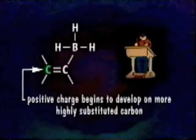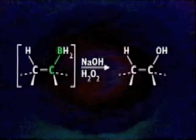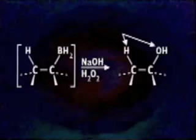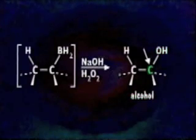As the Lewis acid borane approaches the alkene double bond, a positive charge begins to develop on the more highly substituted carbon. This encourages borane to simultaneously donate a hydride to the more substituted carbon. Hydrogen peroxide and a base are then added, and the boron-carbon bond is cleaved and replaced with an OH group. The net addition of H and OH to the double bond is syn, meaning they both end up on the same side of what was the double bond. The final product is an alcohol with the hydroxyl on the less substituted carbon.